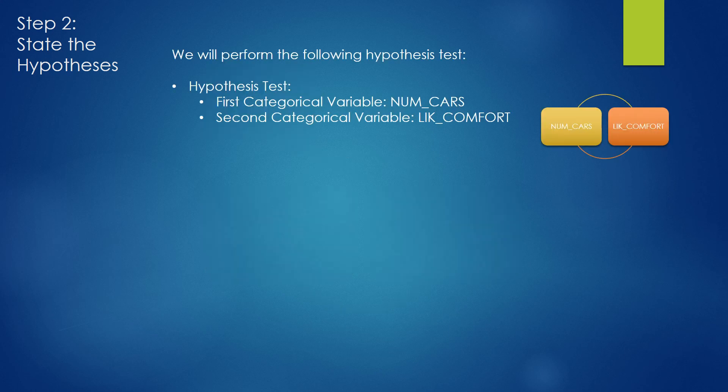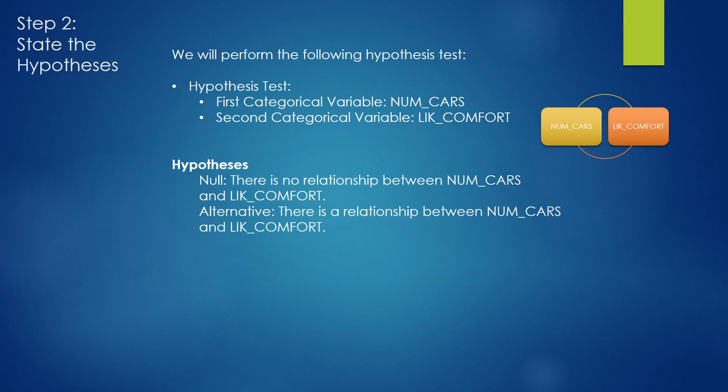Now that we know everything we need to know, let's state the hypotheses for this test. From the previous slide, we realized there are two categorical variables, numcars and LickComfort. When we plug these into the template for the hypotheses, we basically come up with a null and alternative hypothesis.